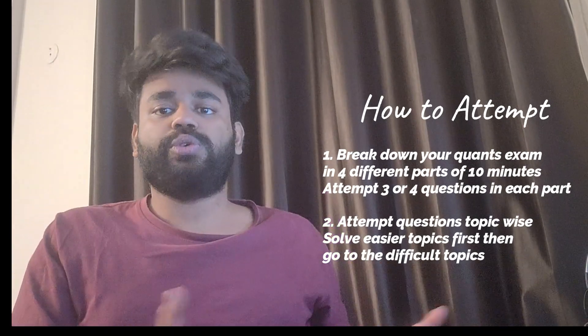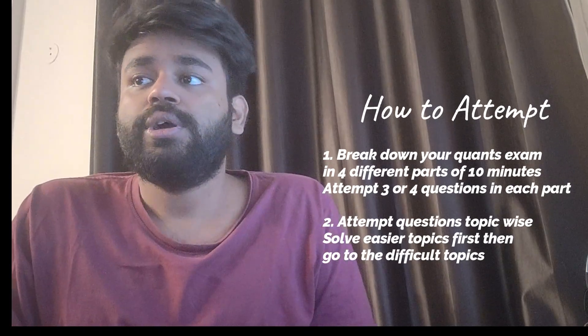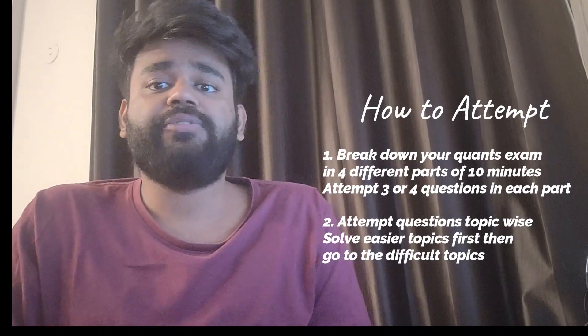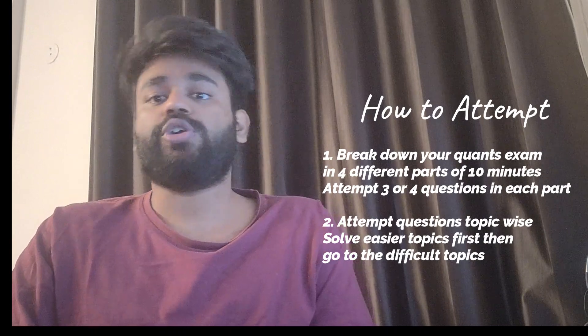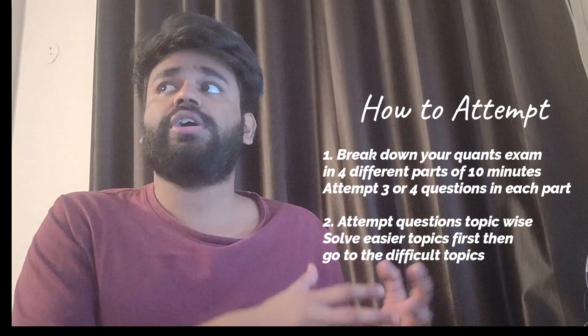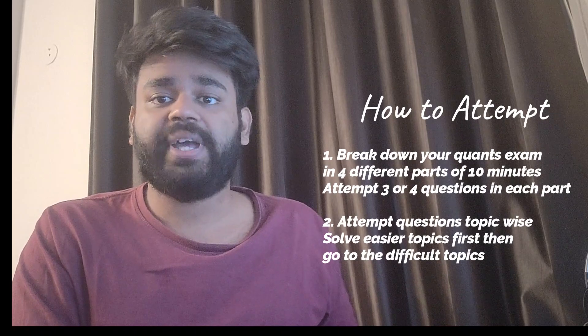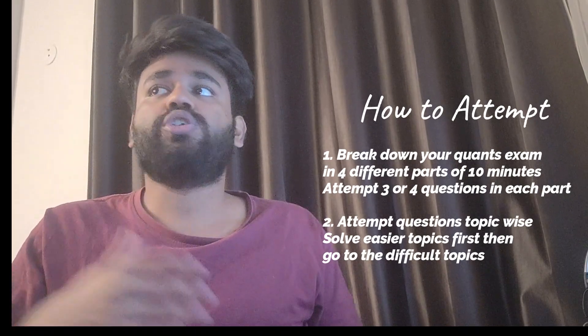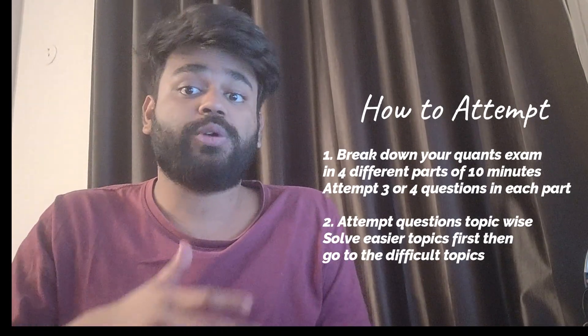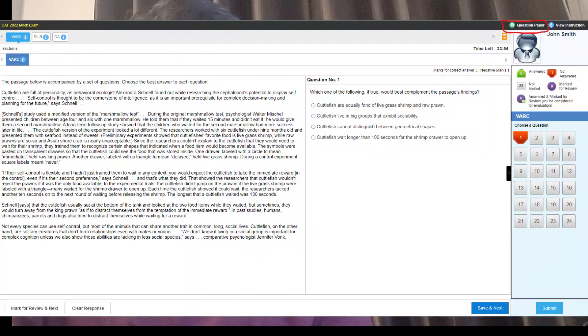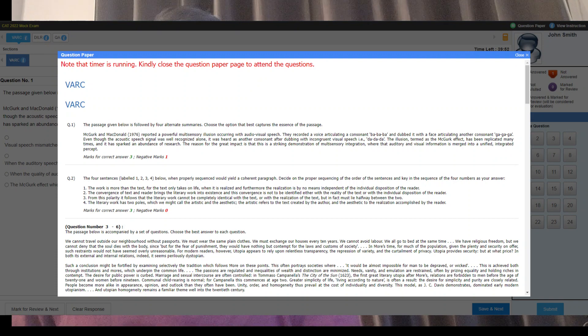So this was how you can attempt the examination. For students who are relatively weak or strong in particular topics, I would say go through the entire question paper. There is a question paper button in the examination which would display the entire question paper at once. Go through the entire question paper, select the questions from the topics that you are strong at, solve those questions first and then move on to the topics in which you are weak.